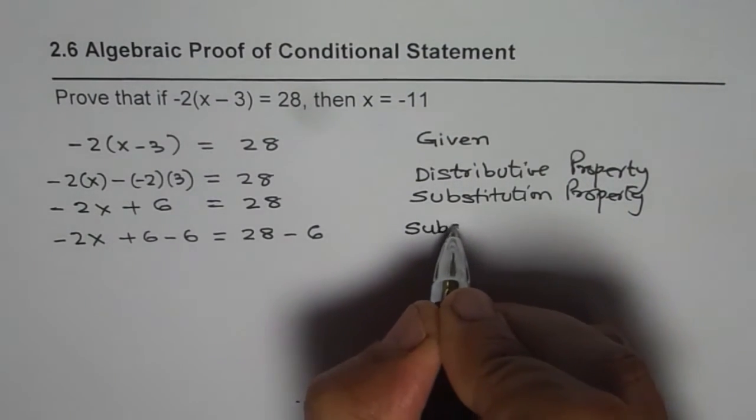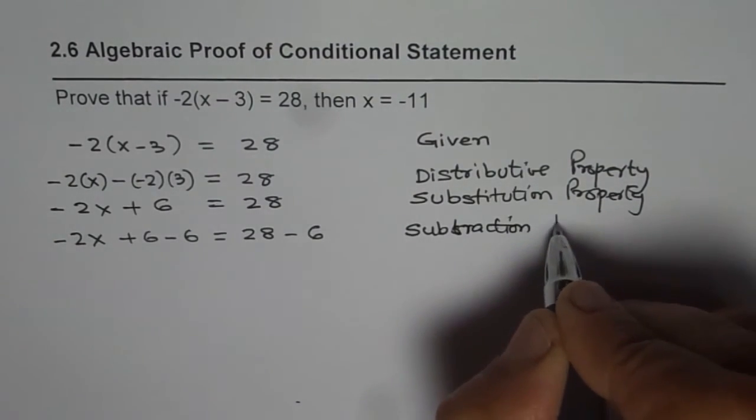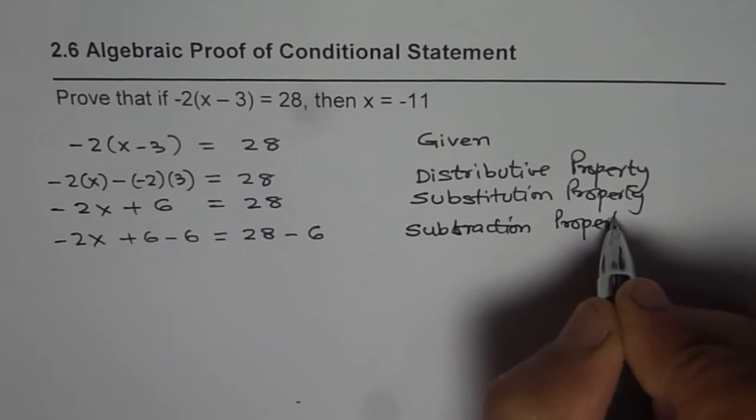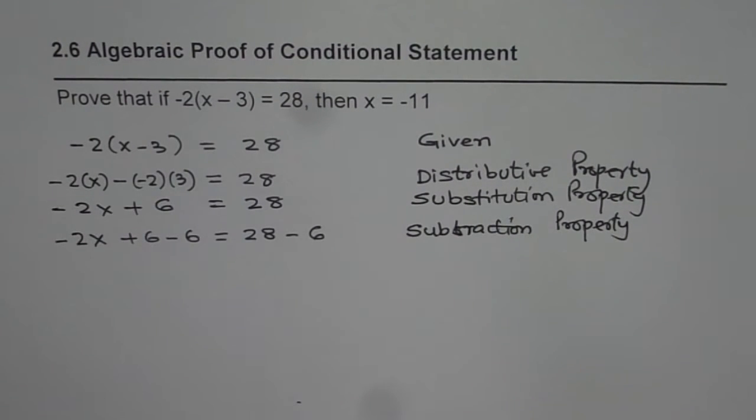Here we subtracted a constant from both sides, correct? So the property is subtraction property. Not substitution property, but subtraction property of equality. If a = b, then a - c = b - c.